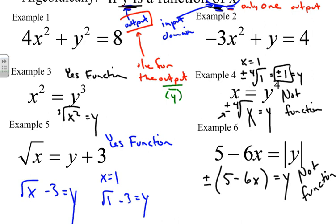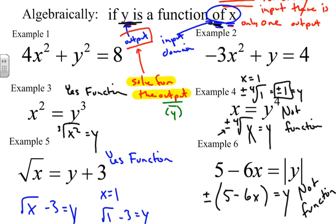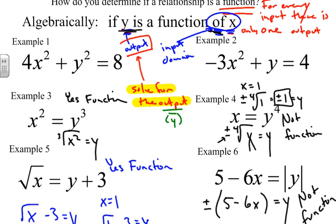To summarize: to figure out if an equation is a function, you solve for the output. Determine the output by identifying which variable is not the 'of' variable — for example, in 'Y is a function of X,' Y is the output and X is the input. Solve for that output. If you end up with a plus or minus — two different outputs — it cannot be a function.